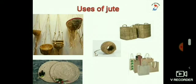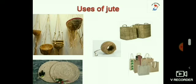Jute cloth is biodegradable, making it an eco-friendly fabric. It is strong and durable. Jute is used for making cloths, shopping bags, carpets, curtains, ropes, and mats. It is also used to make sacks for storing grains, which helps sustain the livelihoods of millions of small farmers. It is also used for making wall hangings for decoration.